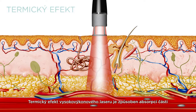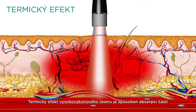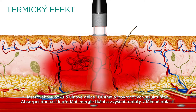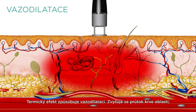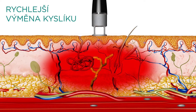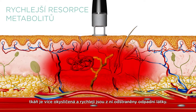The thermic effect of high-intensity laser therapy is caused by absorption of the 1064 nanometer laser beam in the superficial structures, which consequently causes a temperature increase in the tissue. The thermic effect also causes vasodilation. As a consequence, blood profusion increases, larger amounts of oxygen are delivered to the tissue, and more metabolites are absorbed.